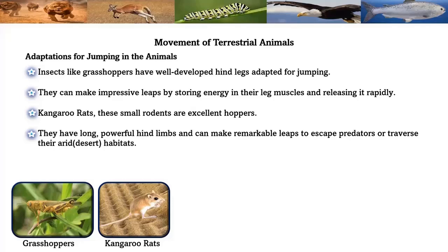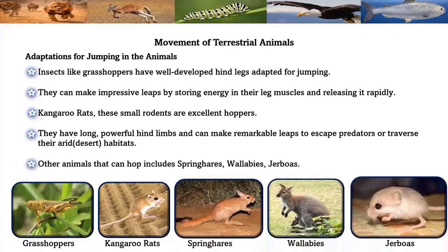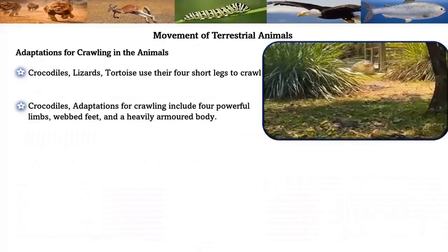Kangaroo rats are small rodents that are excellent hoppers. They have long, powerful hind limbs and can make remarkable leaps to escape predators and traverse their arid habitats. Other animals that can hop include springhares, jerboas, and gerbils.